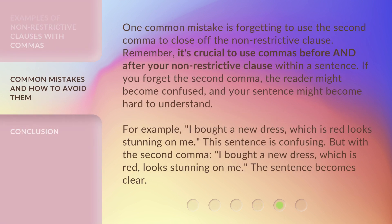One common mistake is forgetting to use the second comma to close off the non-restrictive clause. Remember, it's crucial to use commas before and after your non-restrictive clause within a sentence. If you forget the second comma, the reader might become confused and your sentence might become hard to understand. For example, 'I bought a new dress, which is red looks stunning on me' is confusing, but with the second comma — 'I bought a new dress, which is red, looks stunning on me' — the sentence becomes clear.